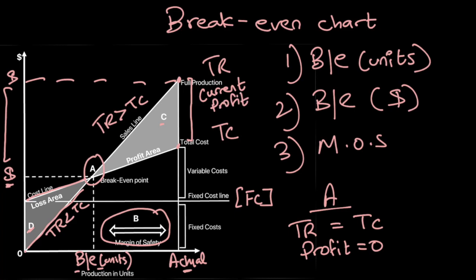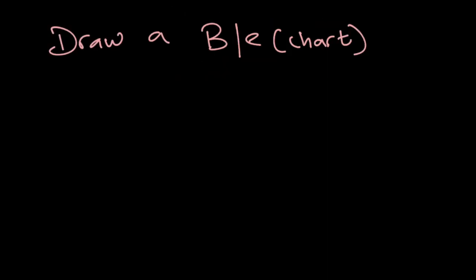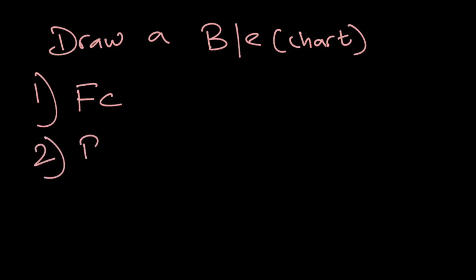Everyone should be able to read this graph and locate these points. Now let's discuss how to draw this graph — what points to use. To draw a breakeven chart, you need the following: number one, you need to know your actual fixed cost — that's the horizontal line — so that should be given in the question. Number two, you need to calculate the breakeven point. For units, we use fixed cost divided by contribution per unit.